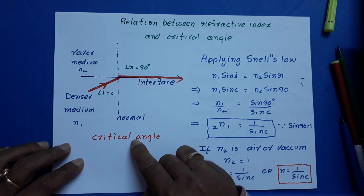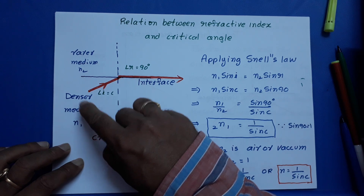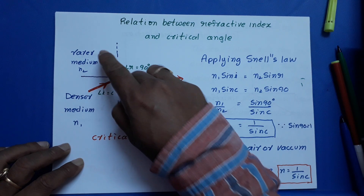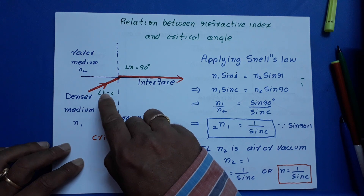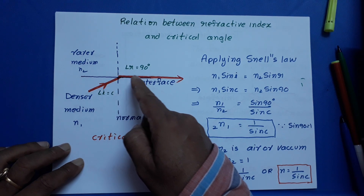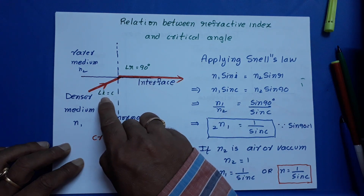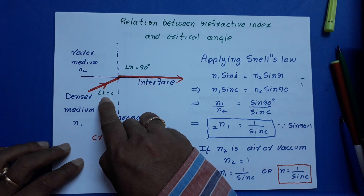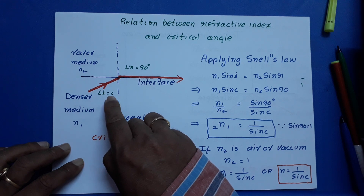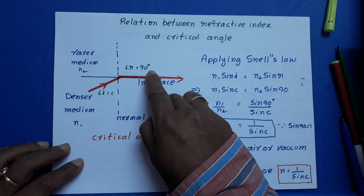How can you define critical angle? When a light ray passes from denser medium into rarer medium, at a particular angle of incidence, the refracted ray grazes out the interface — that angle of incidence is called critical angle. So when i is equal to c, then angle r is equal to 90 degrees.